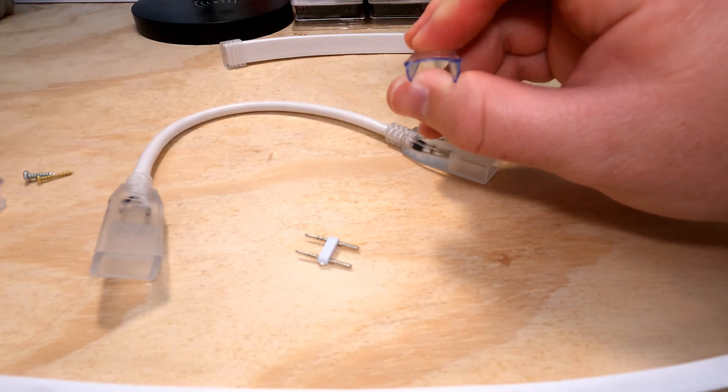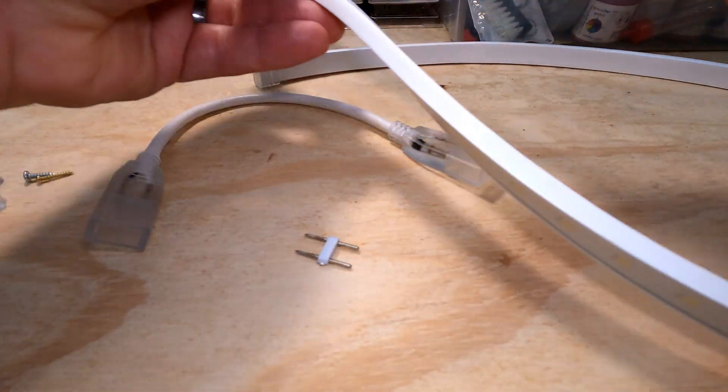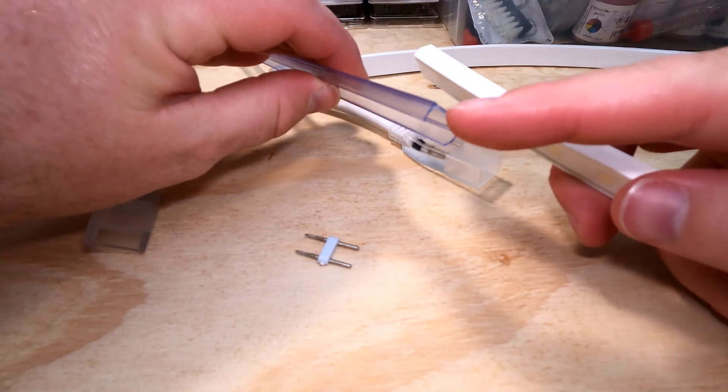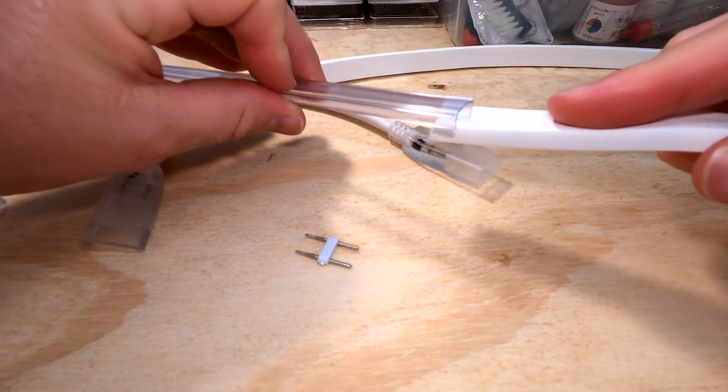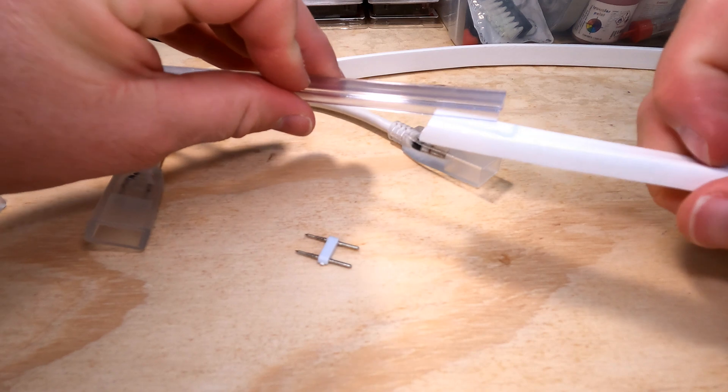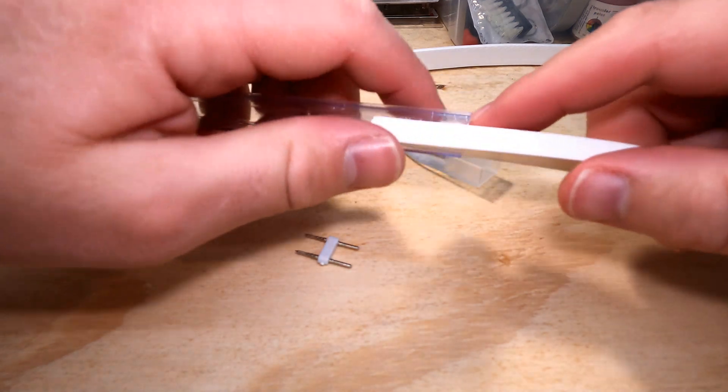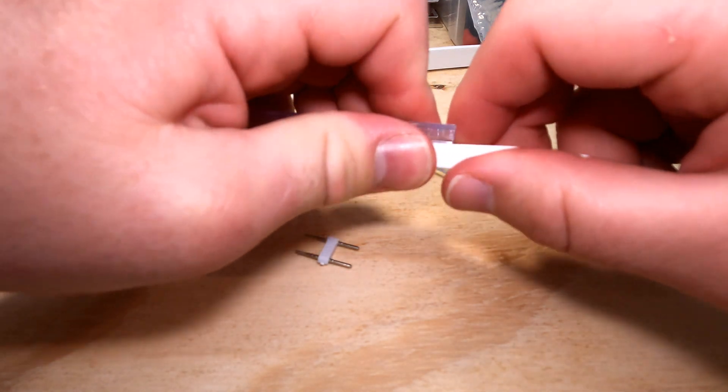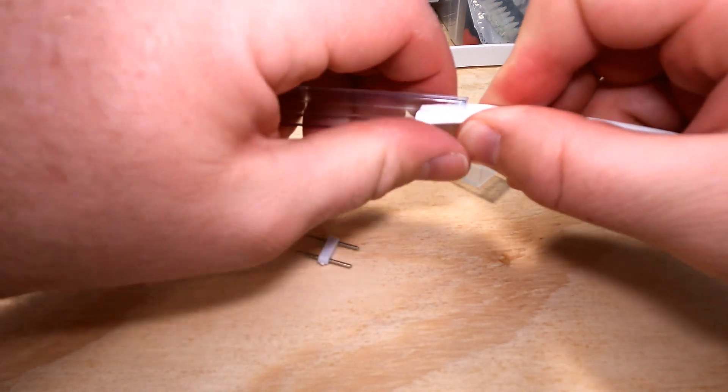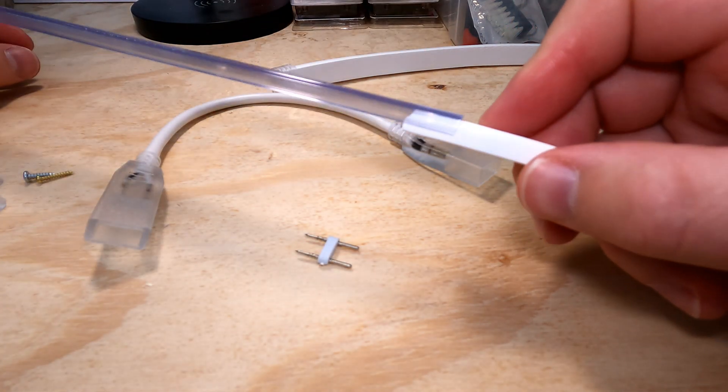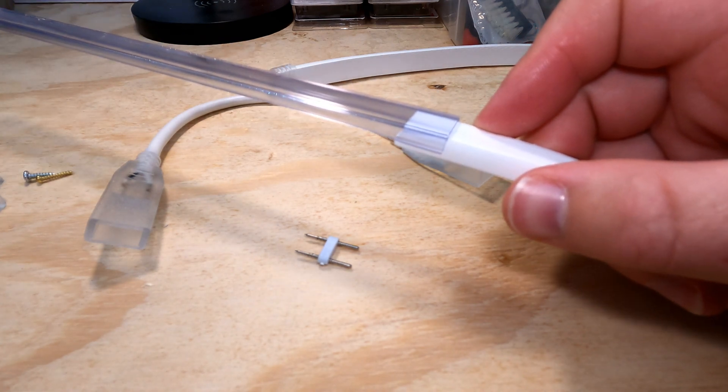So if you look at it, it kind of has a U shape. And so what ends up happening is you would attach this to the underside of whatever it would be. And then the LED strips actually just kind of push in. It is tight to push it in. Let me try and show it.